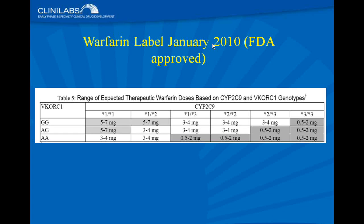This is the warfarin label approved just a couple of months ago, showing the expected range of therapeutic doses based on CYP2C9 and VKORC1 genotypes. We will see whether this reduces the incidence of bleeding adverse events with warfarin — it was just newly available.